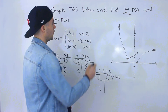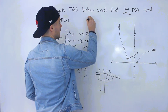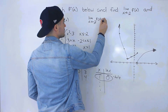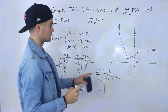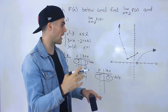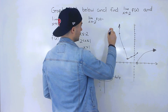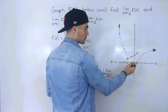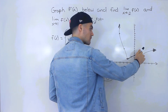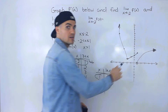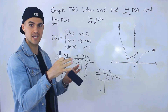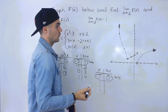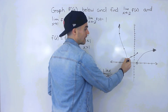From the graph, we can figure out what the limits are. For the limit as x approaches negative two, we see what y value we approach from both sides. Approaching from the negative side, we approach a y value of one. Approaching from the positive side, we're also approaching that y value of one. Because it approaches the same y value from both sides, this limit equals one.